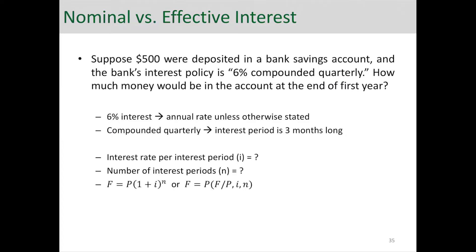Interest rate per interest period is shown with I. In this case, I would be 6%, which is the annual rate, divided by 4 sub-periods that we have within a year. So it's 1.5% per quarter. The number of interest periods within a year is 4.